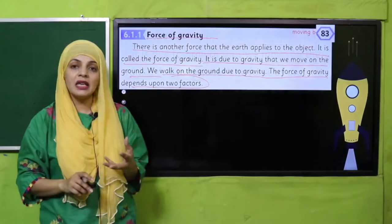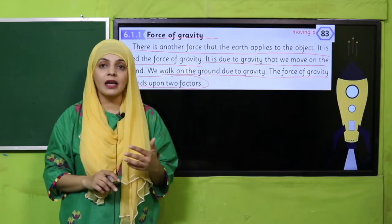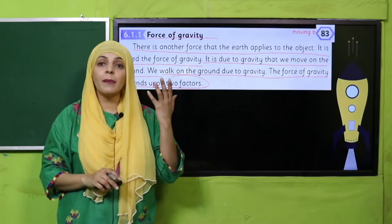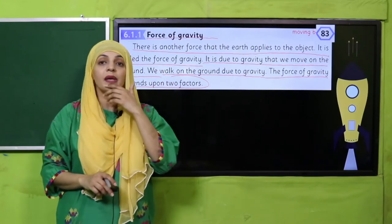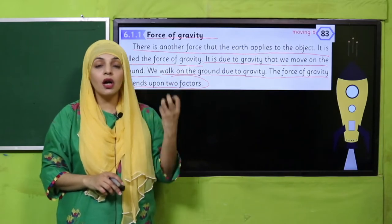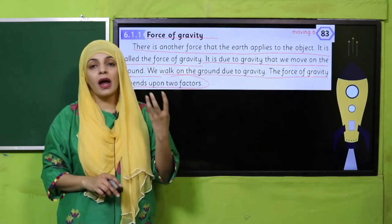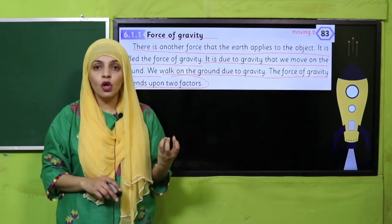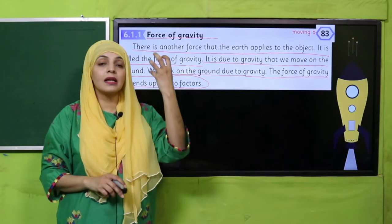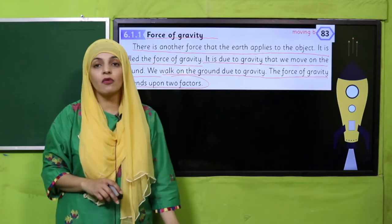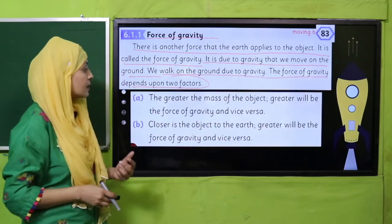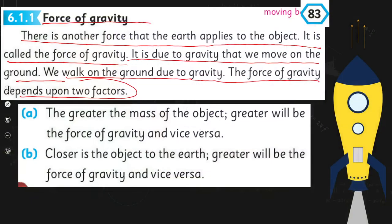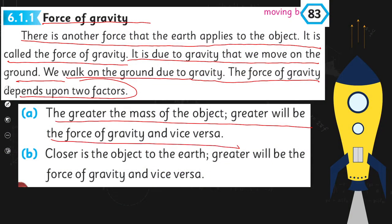Gravity ki wajah se aap chal sakte hain. Cheezein jab hawa mein aap unko phekte hain to wapas aapke paas aajati hain, neechay aa giriti hain, because the earth attracts them. Wo force jo unke upar exert hoti hai jiski wajah se wo wapas aate hain — that is the force of gravity, that is the earth's pull.